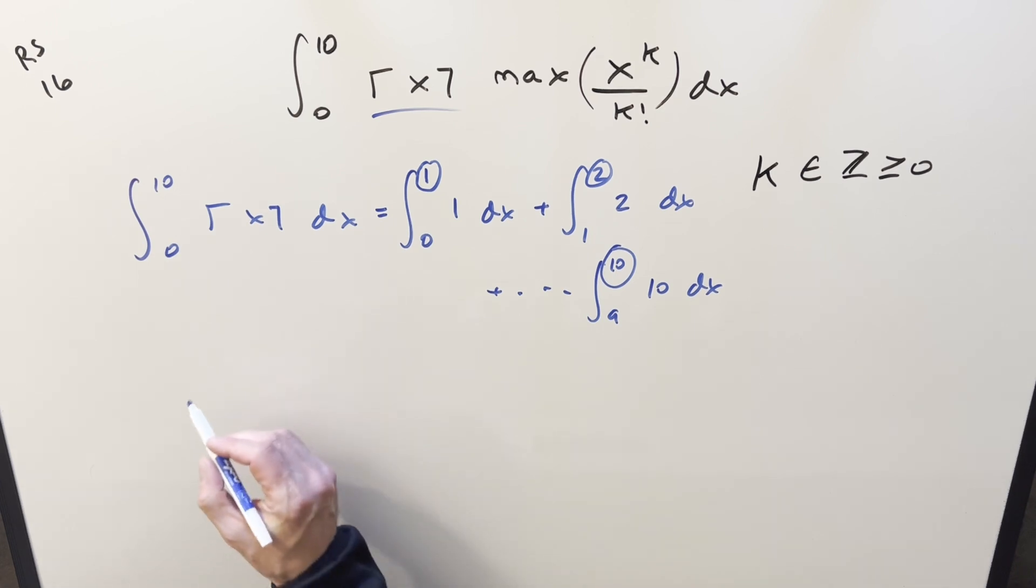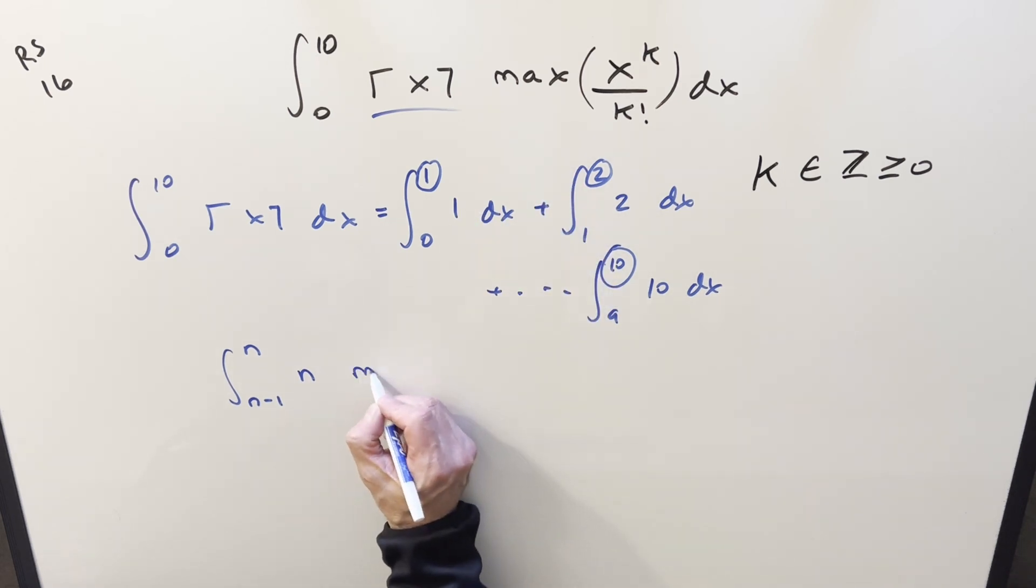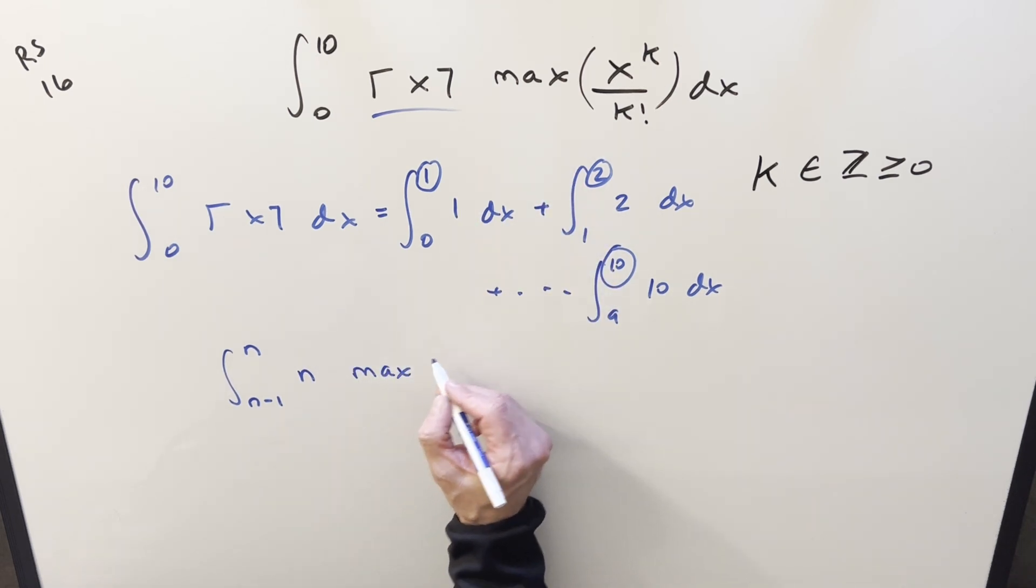And so what I want to do is just generalize any one of these integrals. So we can write it as an integral from n minus 1 to n, where the ceiling part, it's always going to round us up to this n. So we're going to have n. And then let's bring this max function back into it. So we're going to have it just times all this max stuff.